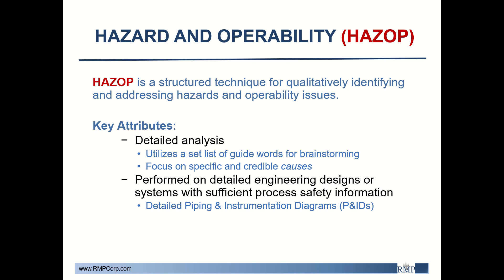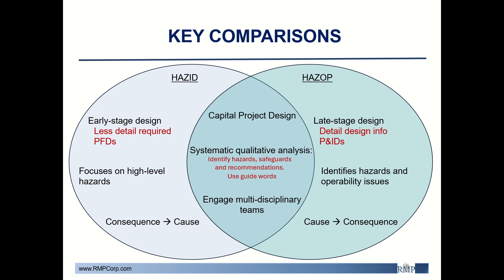In HAZOP, it's very typical to use a set of guide words or deviations for brainstorming different causes. For example, guide words like 'no or low flow' prompt the team to think of causes that could lead to no or low flow within a specific part of the process.